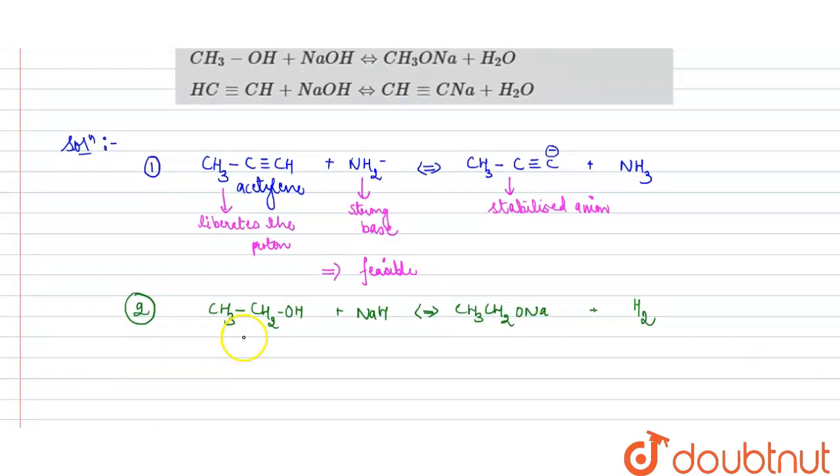And if we write the third reaction also, because both of them have a similar explanation. This third reaction is CH3OH. We are writing 2 and 3 together because here also we have an alcohol and here also we have alcohol present. In second we have ethanol, and in third we have methanol.